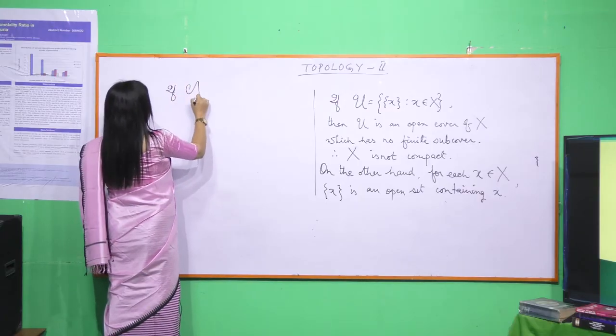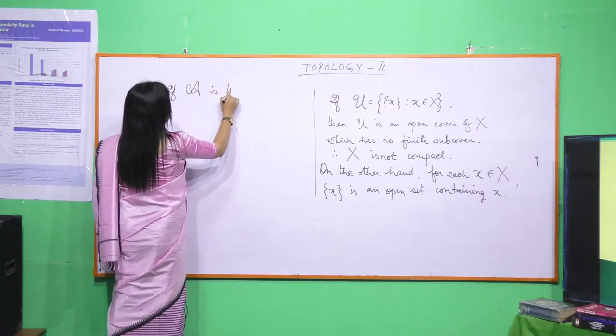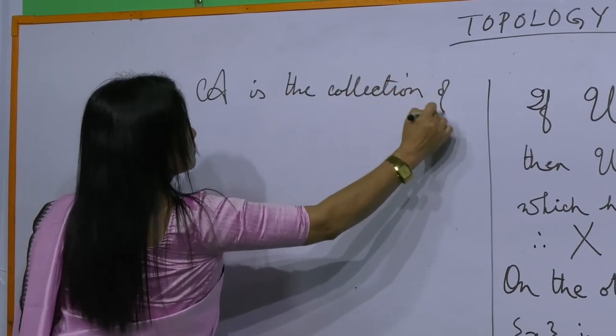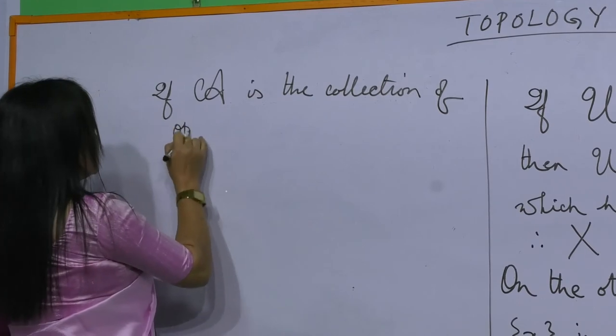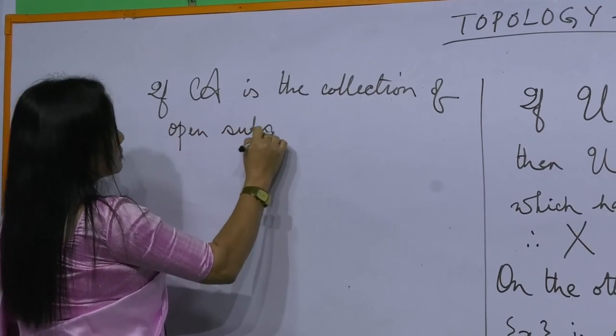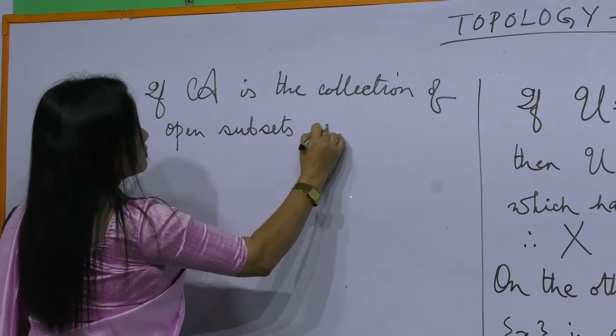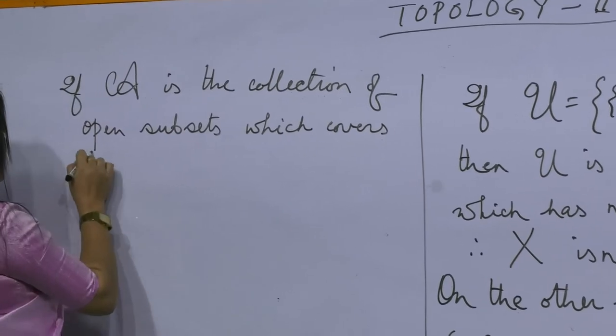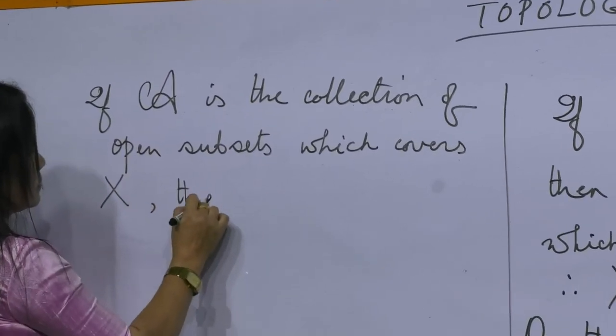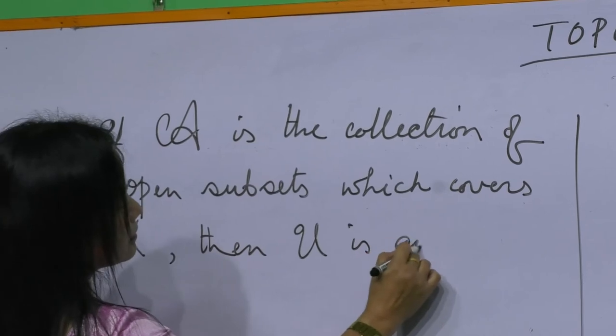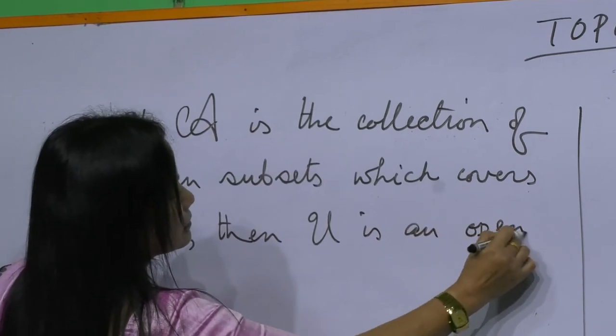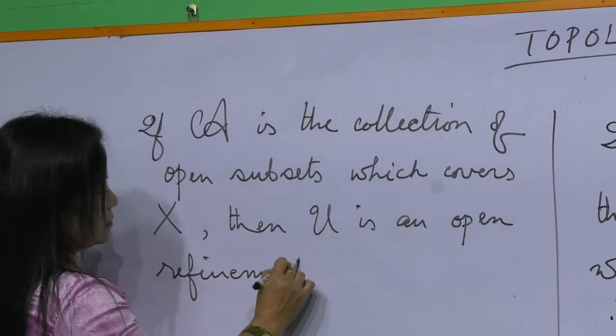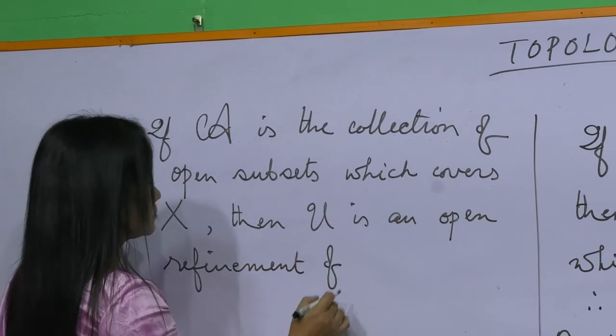If A is the collection of open subsets which covers X, then U is an open refinement of A.